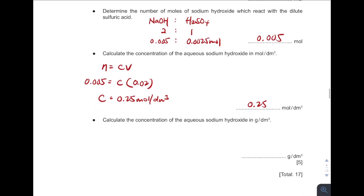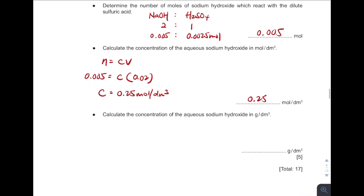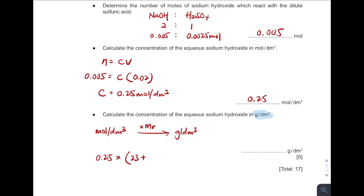You are asked for the concentration in grams per dm³. To convert concentration from mol/dm³ to g/dm³, multiply by the molar mass. So 0.25 × molar mass of NaOH. Based on the periodic table: sodium Na = 23, oxygen = 16, hydrogen = 1. Total molar mass = 40. So 0.25 × 40 = 10 g/dm³.